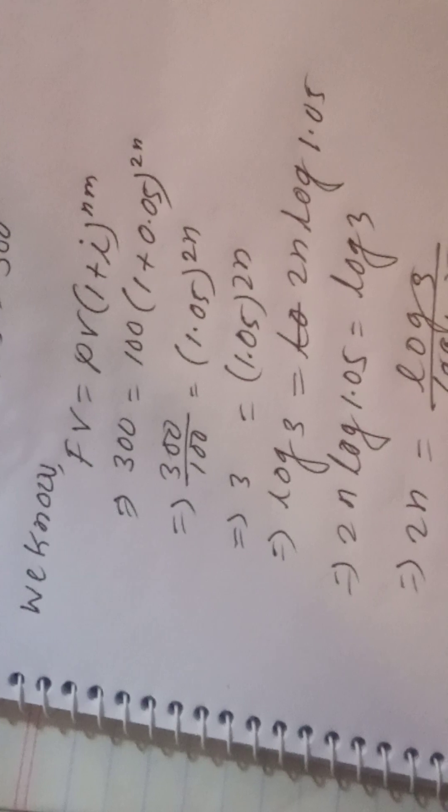2n equals log 3 by log 1.05. Using calculator, log 3 is 0.61 and log 1.05 will be 0.0107. So 2n...